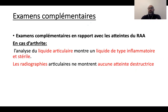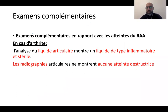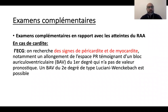En cas d'arthrite, il faut éliminer une arthrite septique — diagnostic grave si on passe à côté. Il faut ponctionner les articulations : le liquide articulaire est inflammatoire et stérile, sans bactérie. Les radiographies ne montrent aucune atteinte destructrice de l'articulation ou de l'os, il n'y a aucune atteinte osseuse, c'est une arthrite aseptique.